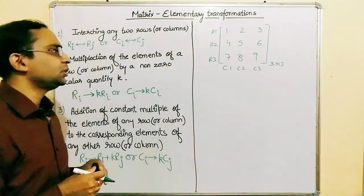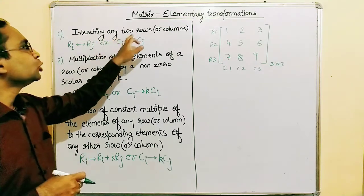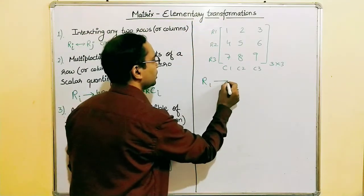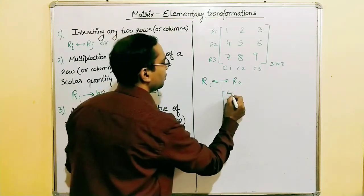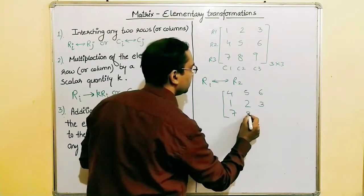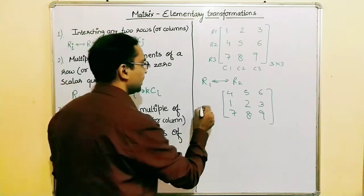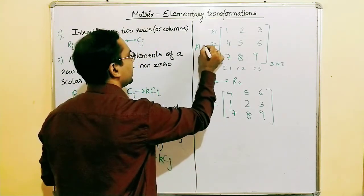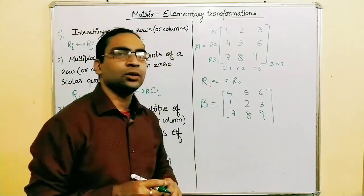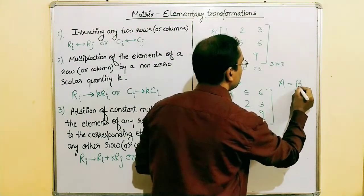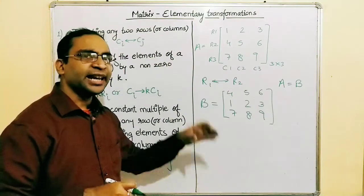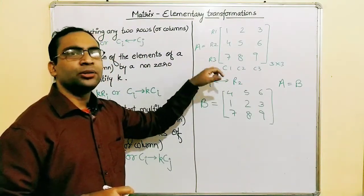Let's apply the first elementary transformation: interchanging two rows. If we interchange row one and row two, the new matrix will have four, five, six in the first row and one, two, three in the second row, with the third row unchanged. If we call this new matrix B and the original matrix A, then A and B are equivalent to each other. Performing an elementary operation on a matrix does not change its value — the result is always equivalent.